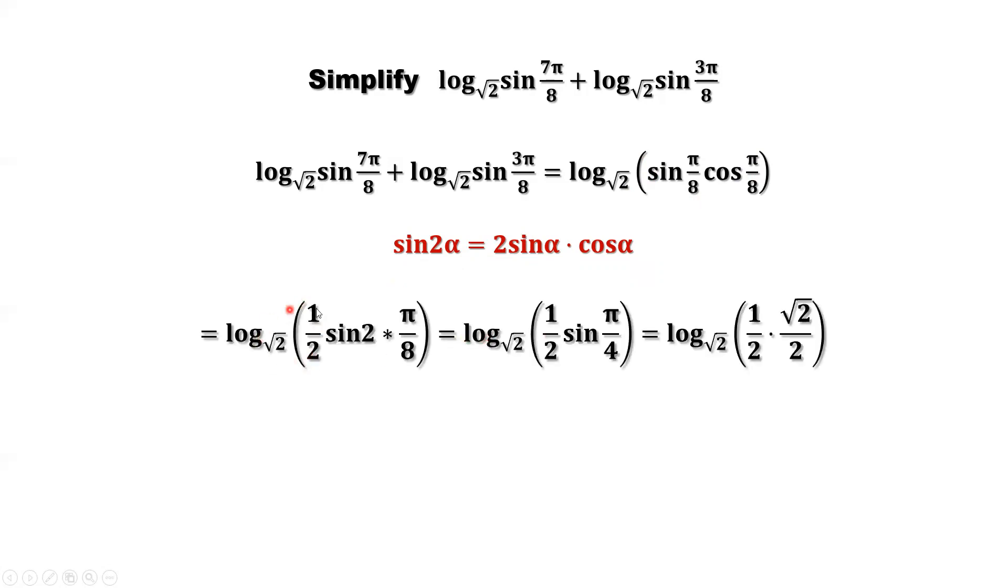So here, everything is the same except this part. That's 2α. Sine 2α. Sine 2α times 1 half. 2α. 2 times π over 8. That's π over 4. Sine π over 4. That's a special angle. That's a special angle. Square root of 2 over 2.